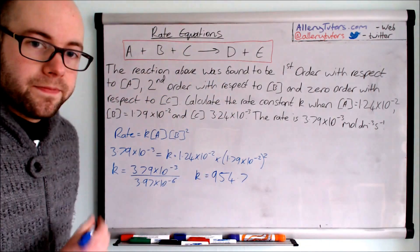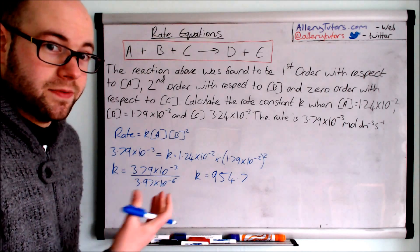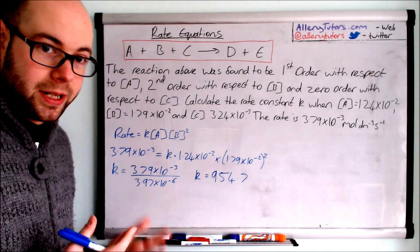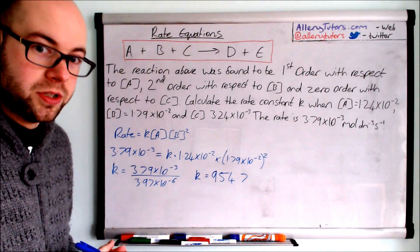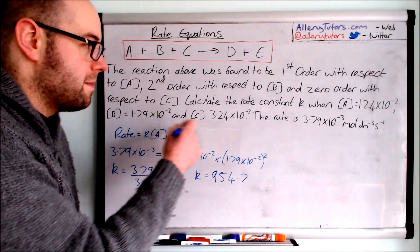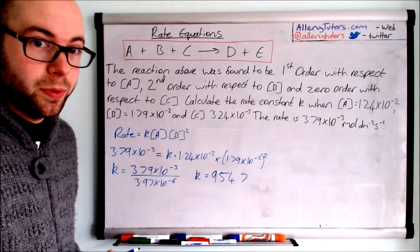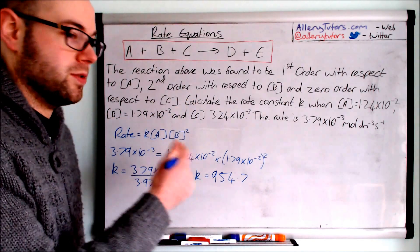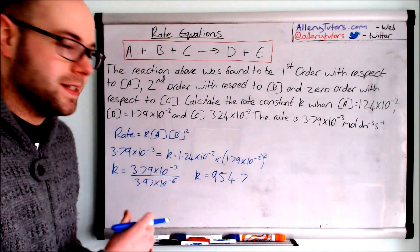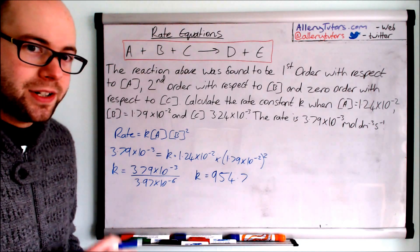Putting that into the calculator gives k = 954.7. That's relatively straightforward. Make sure you get the orders in the right place, omit any zero-order species, ensure numbers are positioned correctly, and rearrange properly.